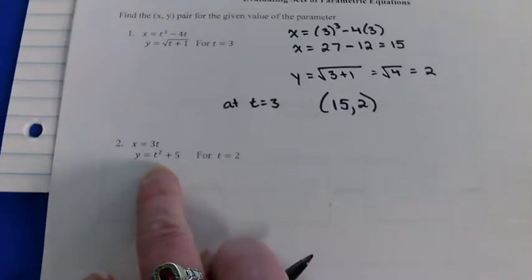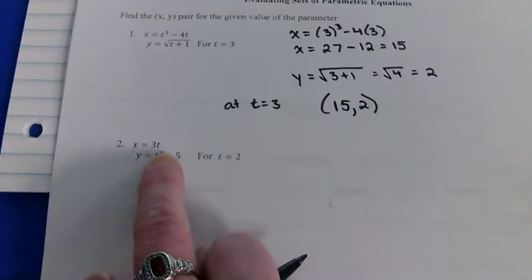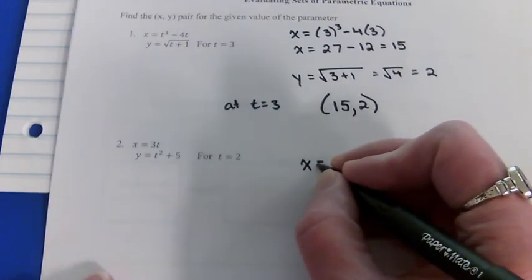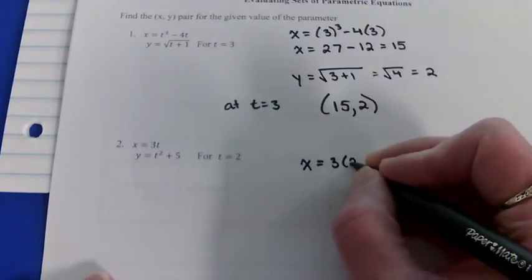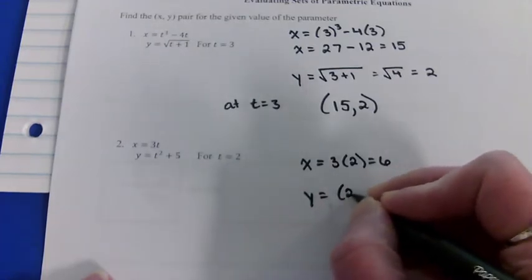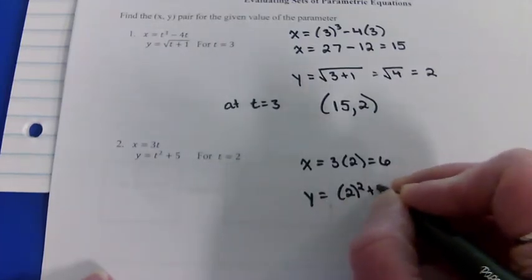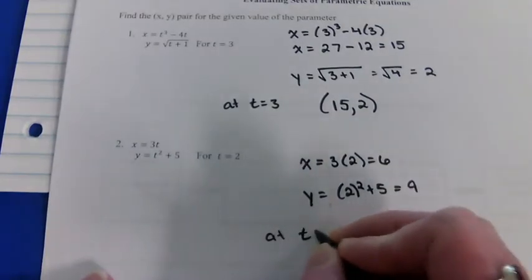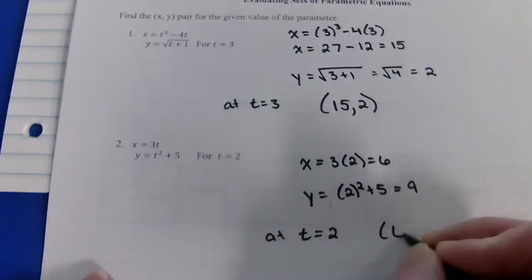What about if we were given these equations? x equals 3t, y equals t squared plus 5. Where's the ant at time 2? So at t equals 2, we are at the point (6, 9).